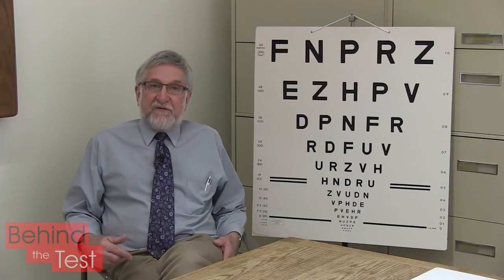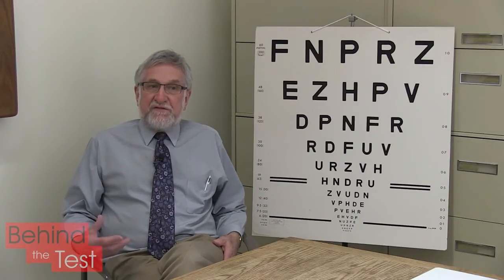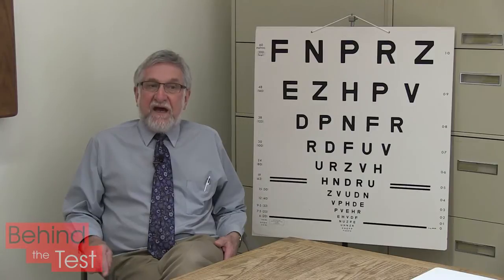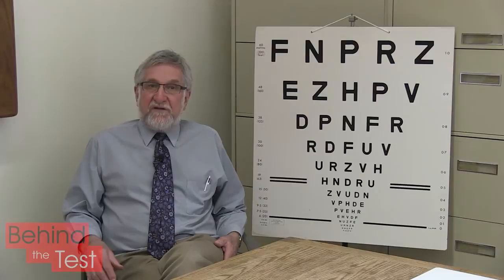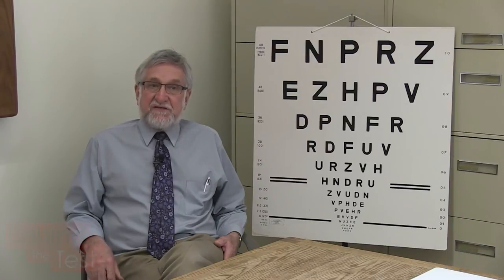Another feature of the charts is that as you go from one size level to the next, there's a constant ratio of size. When you put this combination of features together — that is, the same number of letters per row, proportional spacing, and a constant ratio of size — you end up with a chart where the task is the same at each size level.